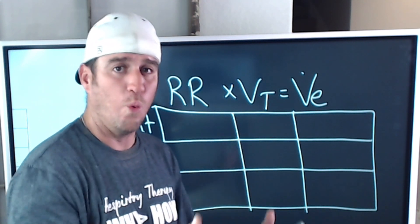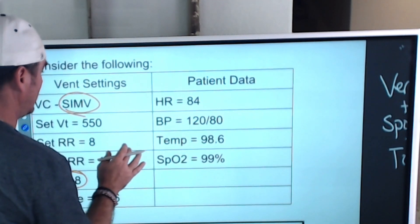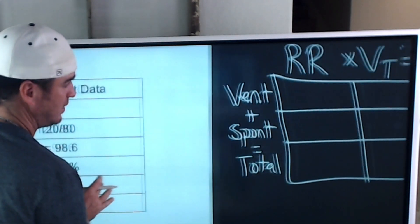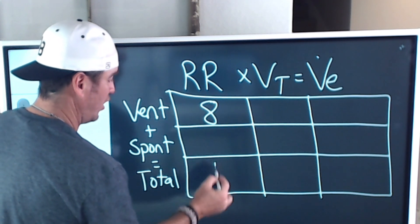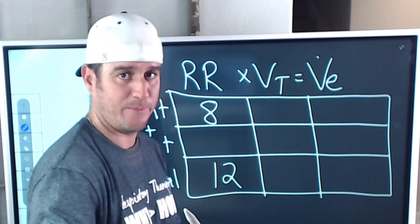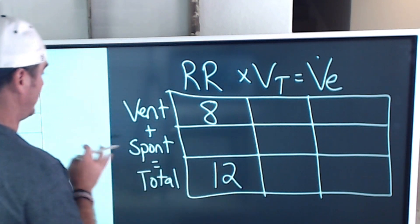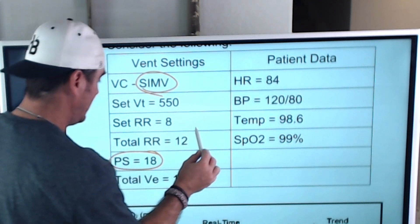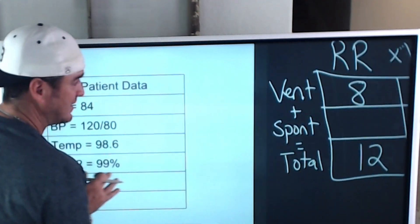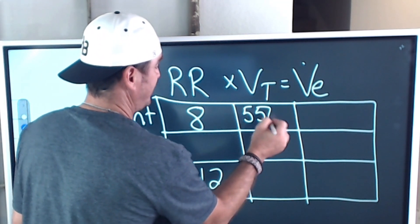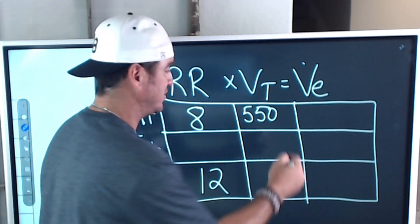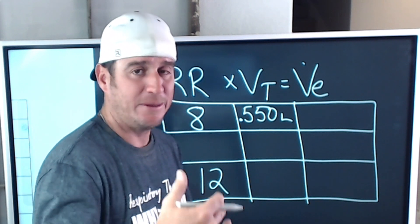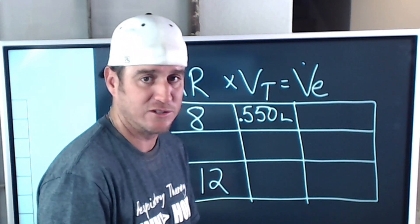Let's fill the table in. For respiratory rate: we have a set rate of 8 and a total rate of 12. For tidal volume: we have a set tidal volume of 550 milliliters — I'll convert to 0.55 liters, because when you get to minute ventilation you need to work in liters. Nothing else about tidal volume is given, so 0.55 liters is all we know from the ventilator.